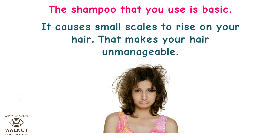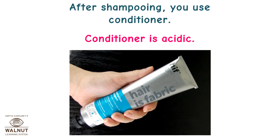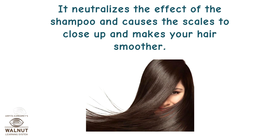The shampoo that you use is basic. It causes small scales to rise on our hair, making it unmanageable. After shampooing, you use conditioner, which is acidic. It neutralizes the effect of the shampoo, causes the scales to close up, and makes your hair smoother.